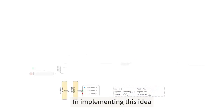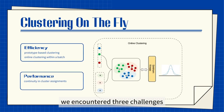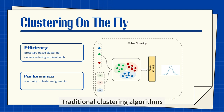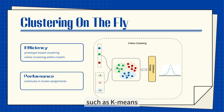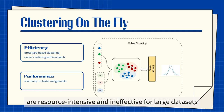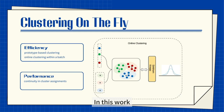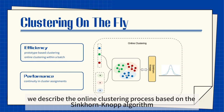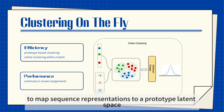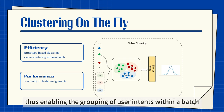In implementing this idea, we encountered three challenges. Challenge 1: Clustering Efficiency and Performance. Traditional clustering algorithms, such as K-Means, are resource-intensive and ineffective for large datasets due to operations over entire datasets and a lack of continuity in cluster assignments. In this work, we describe the online clustering process based on the Sinkhorn-NOP algorithm to map sequence representations to a prototype latent space, thus enabling the grouping of user intents within a batch.